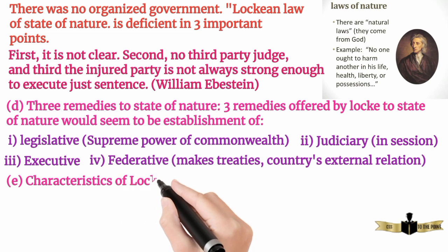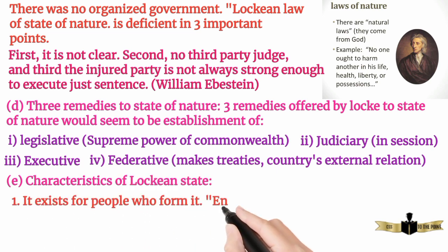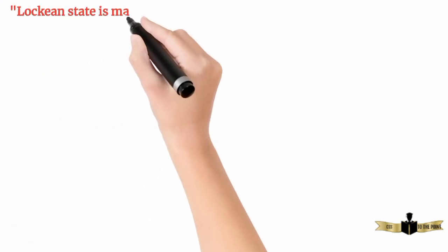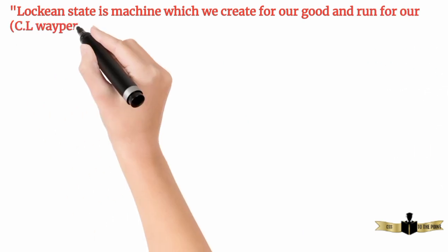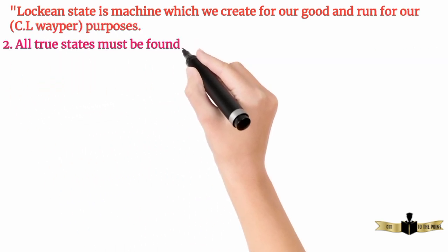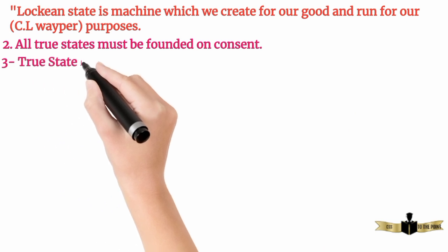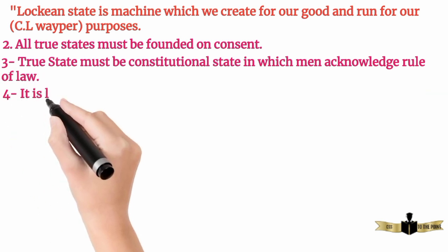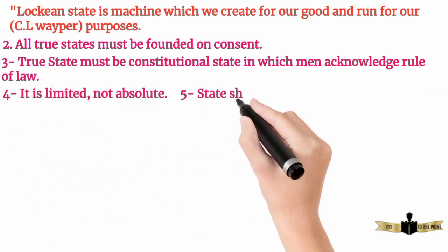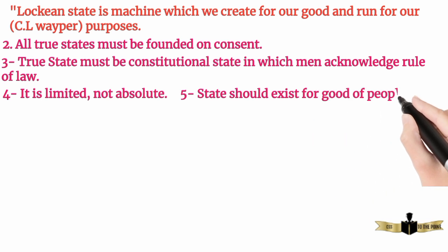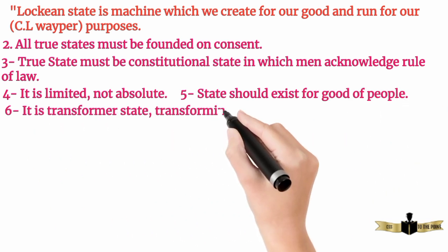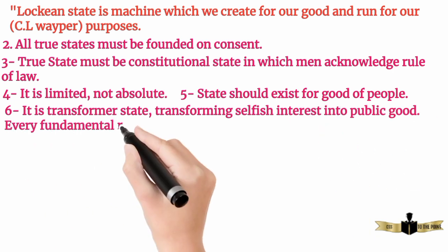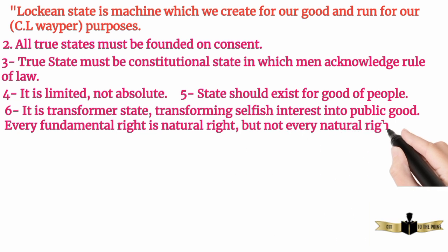Characteristics of Locke's state: 1. It exists for the people who form it. The end of government is the good of the community. Locke's state is a machine which we create for our good and run for our purposes. 2. All true states must be founded on consent. 3. A true state must be a constitutional state, in which men acknowledge the rule of law. 4. It is limited, not absolute. 5. The state should exist for the good of the people. 6. It transforms selfish interest into public good. Every fundamental right is a natural right, but not every natural right is a fundamental right.